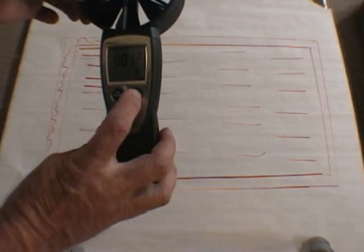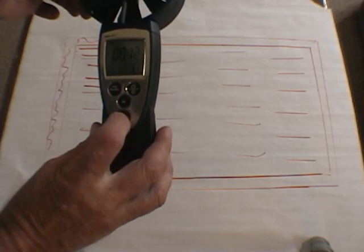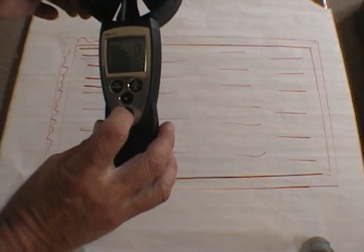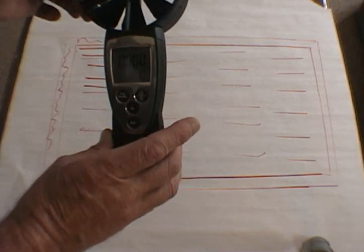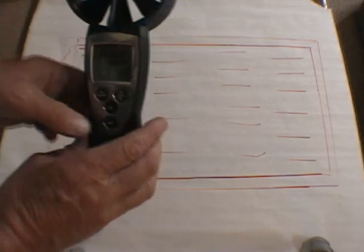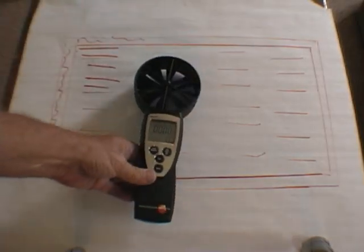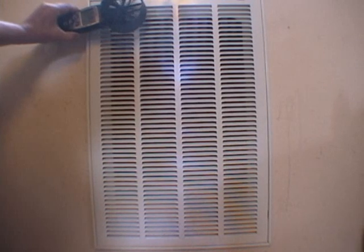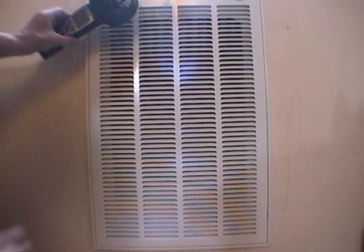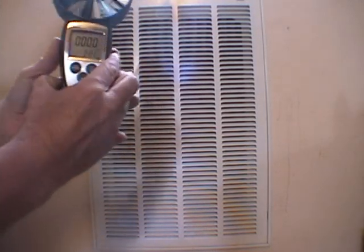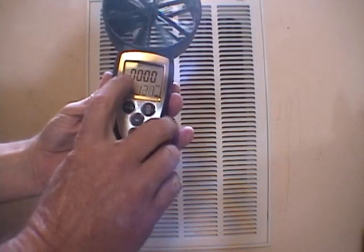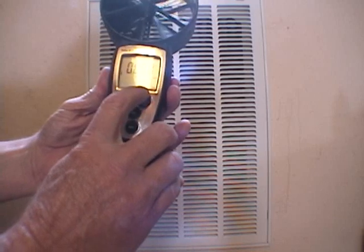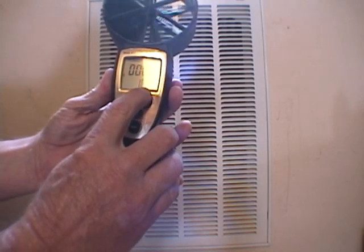We push the on-off button or the mean button again twice, that erases that and brings up for a new reading. So now we can start over. Now we'll go over to a real grill and do a real traverse. Here's our real grill. If you notice, I've got the timer set, and we do have some air velocity in front of this grill.